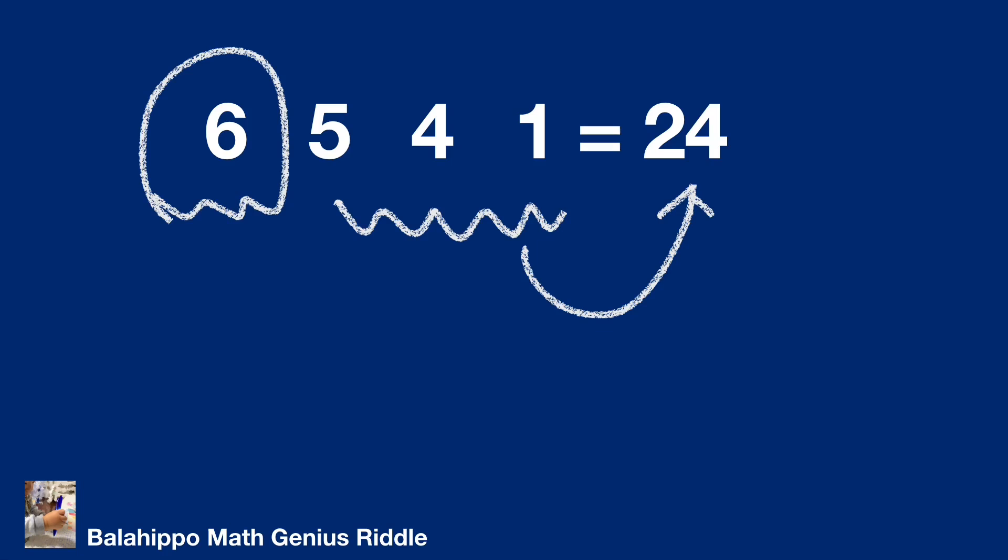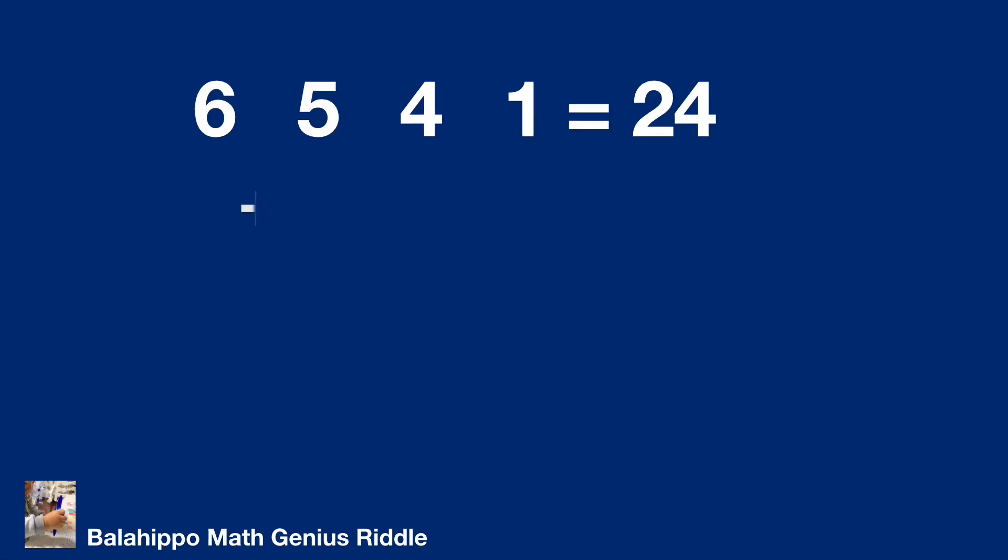First condition: 6 plus the numbers equal to 24, then the value should be equal to 18. Can we get the value from 5, 4, and 1? Even the most close number, 5 times 4 minus 1 equals 19, not equal to 18. So there is no solution.